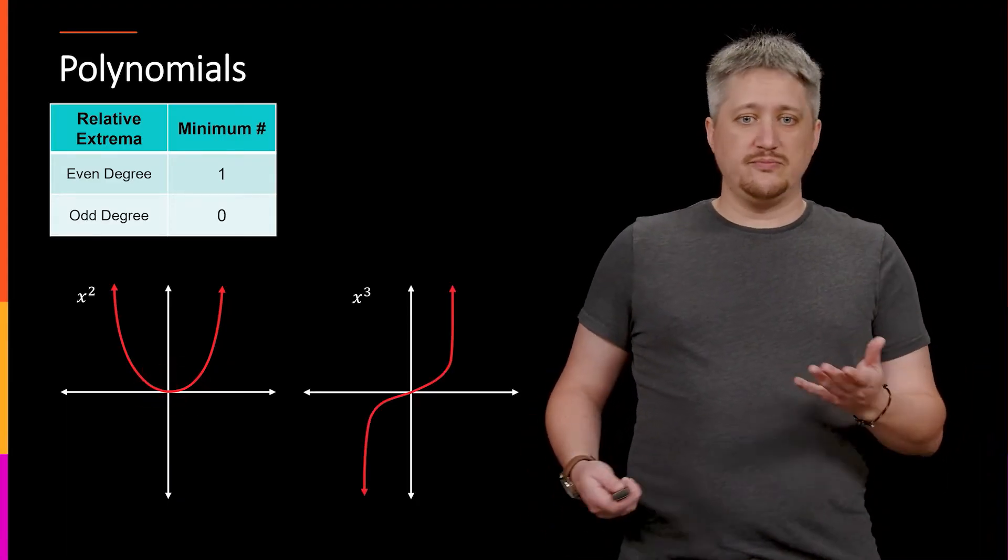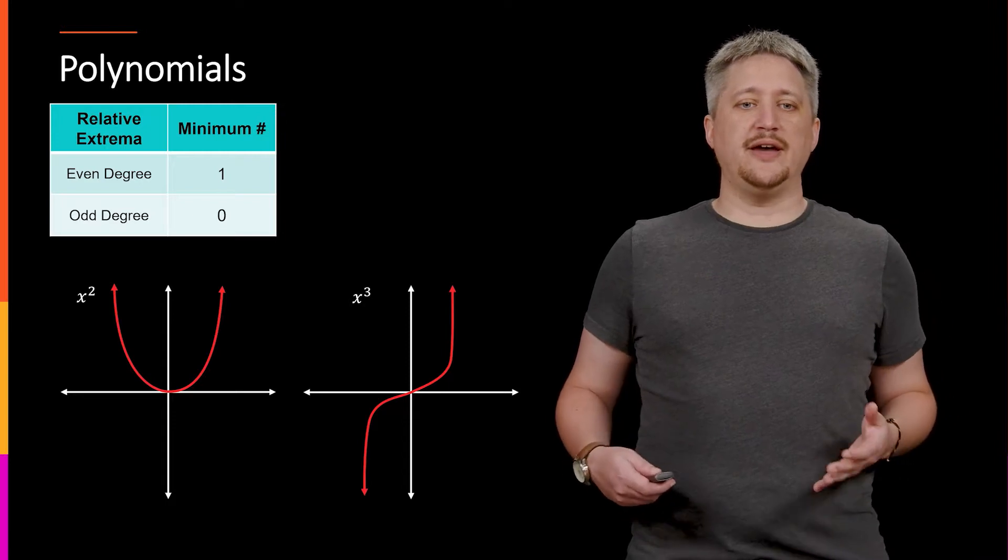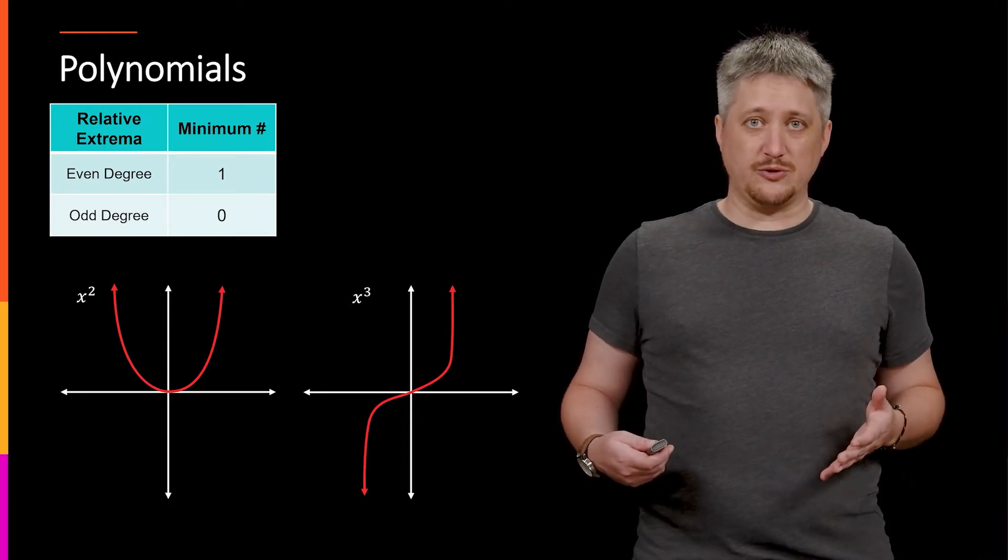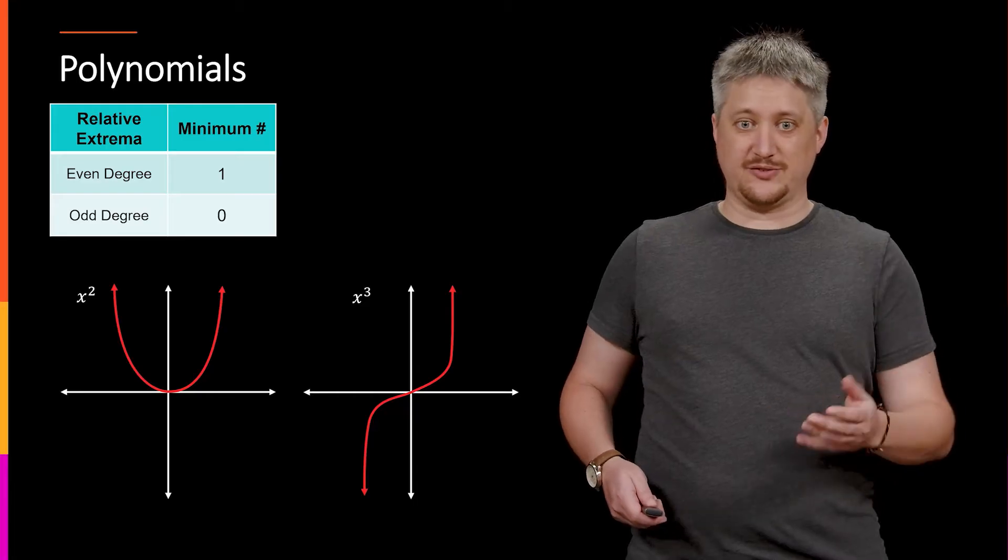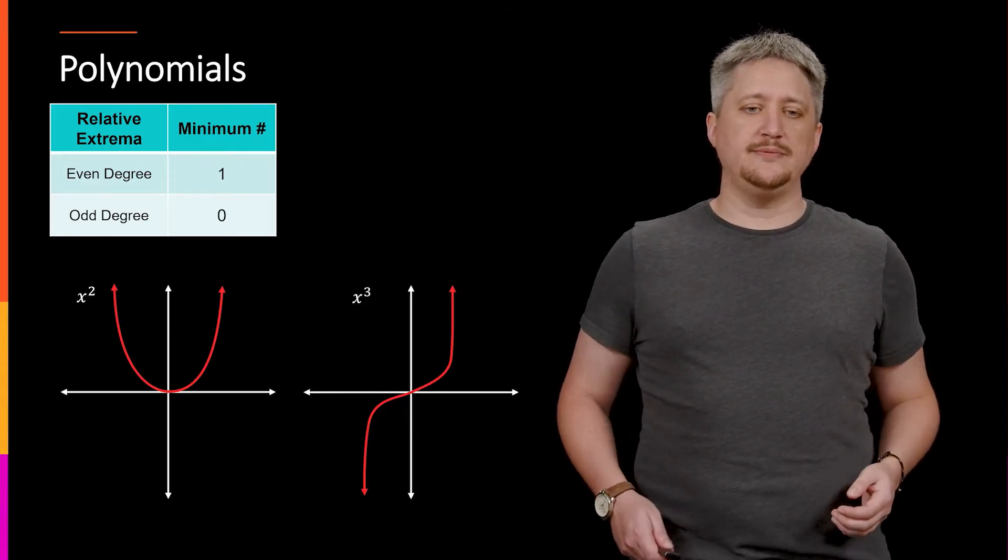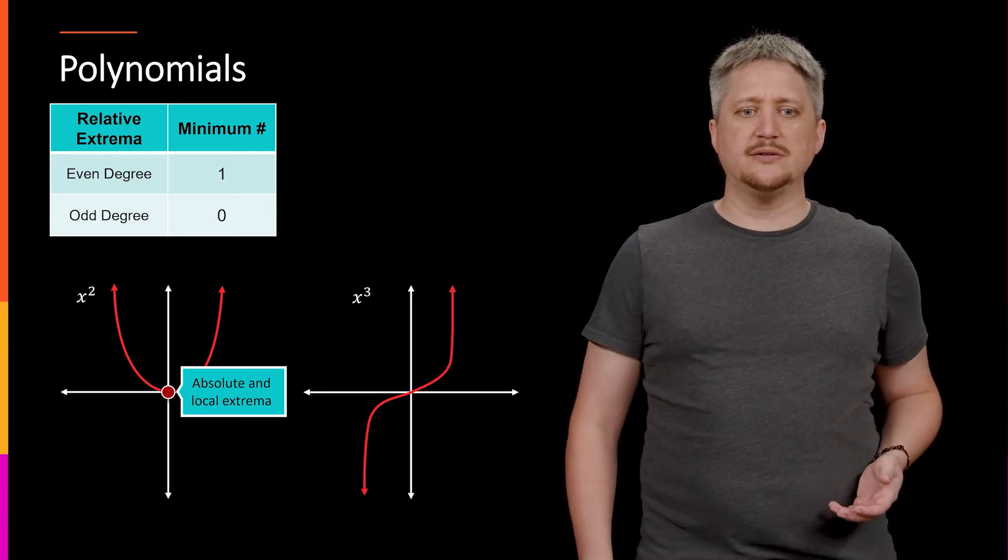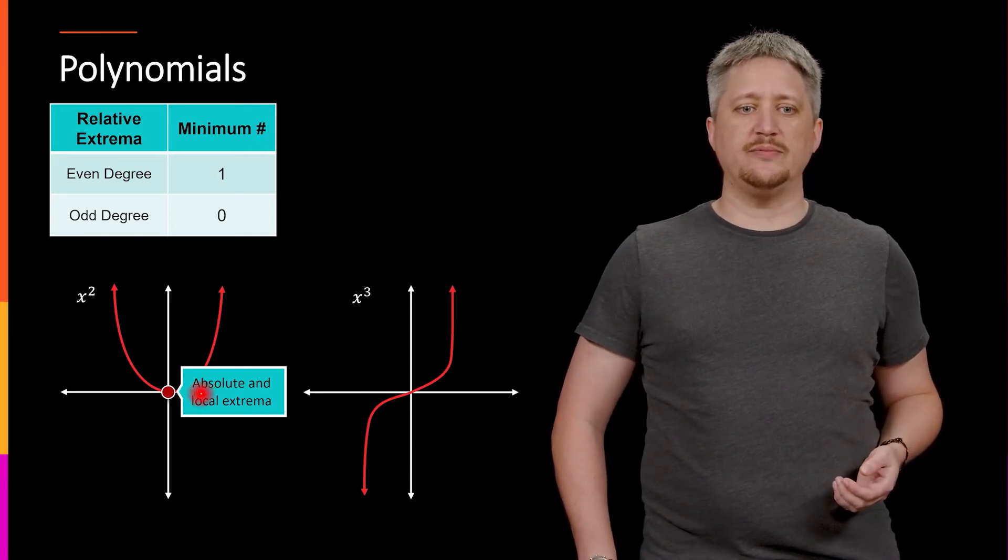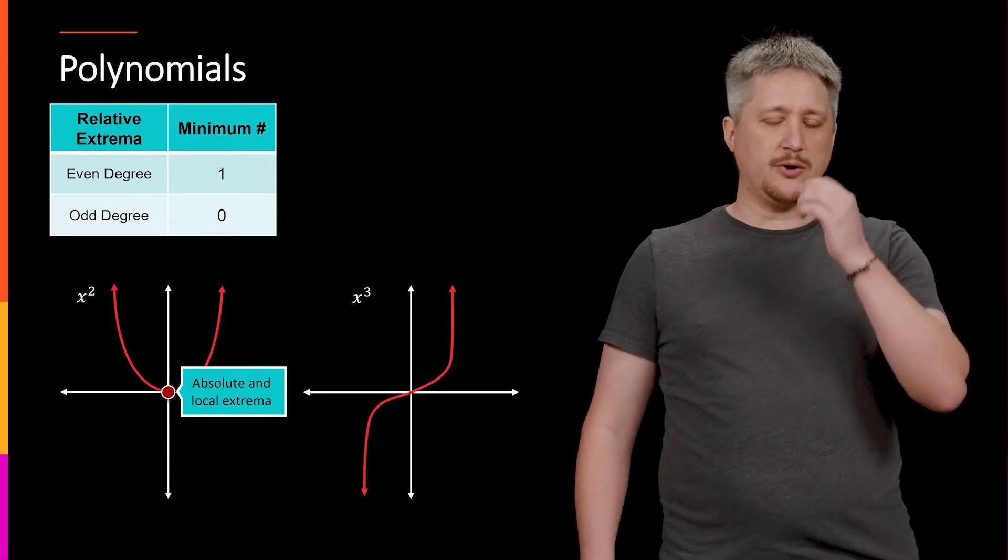Likewise, with odds, like x cubed, we know that it doesn't have any absolutes. So we know the minimum case is going to have zero relative extrema. So to be clear, absolute and local extrema down here, whereas this one, nothing.